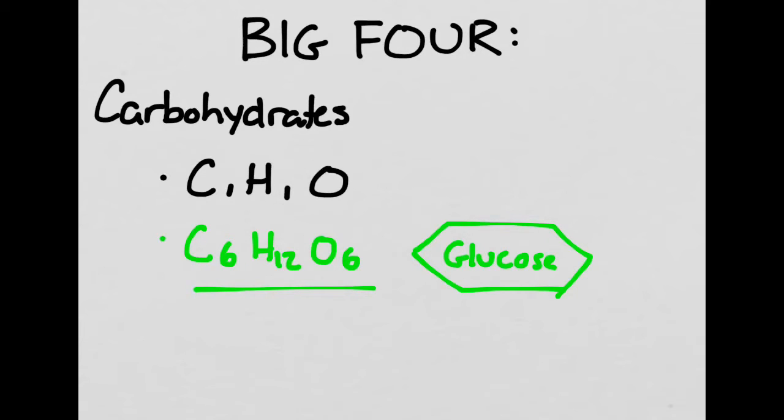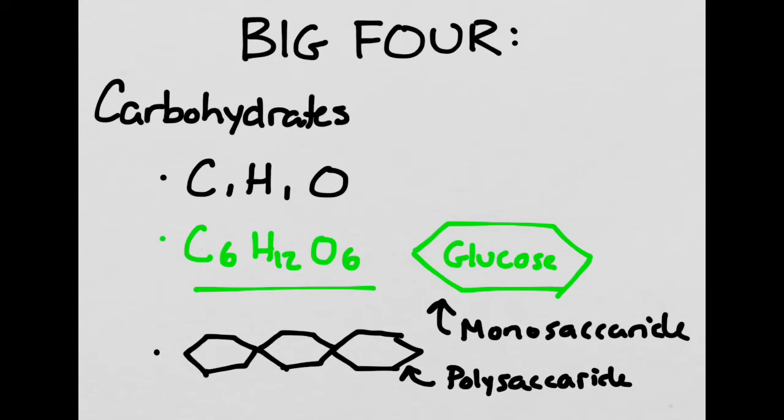Since glucose only has one ring of carbons, we call it a monosaccharide. Something like cellulose, shown below, is what we call a polysaccharide, which has many rings stuck together. Because of its complex structure, it's very difficult for humans to digest, which is why eating beans, which contain lots of cellulose, tends to make you fart.